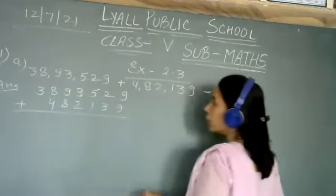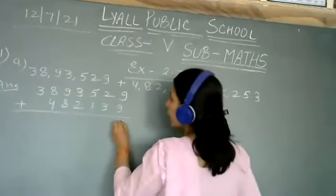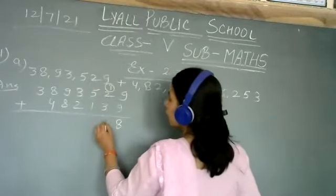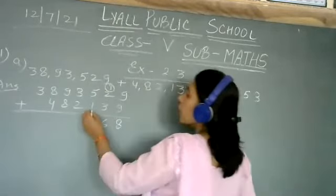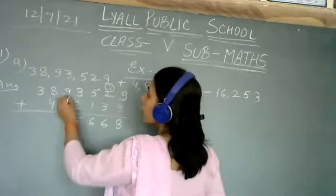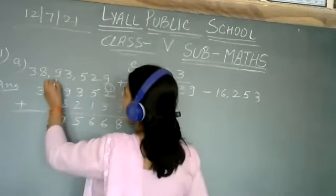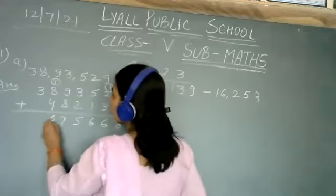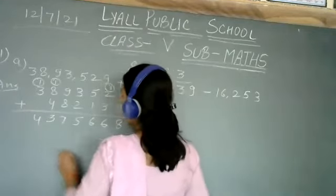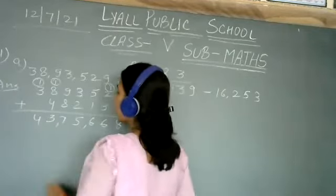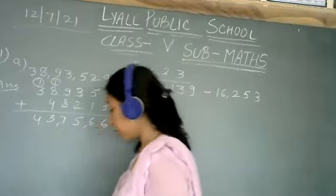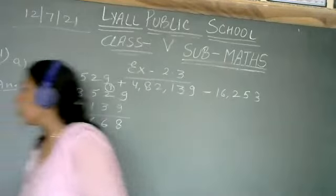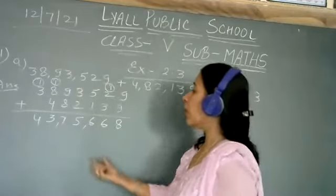Adding both numbers: 9 plus 9 is 18, write 8 carry 1; 2 plus 1 is 3, plus 3 is 6; 5 plus 1 is 6; 3 plus 2 is 5; 9 plus 8 is 17, carry 1; 8 plus 4 is 12, plus 1 is 13, write 3 carry 1; 3 plus 1 is 4. So the addition value is 43 lakh 75 thousand 668.